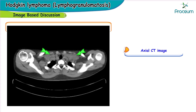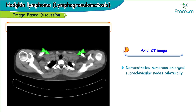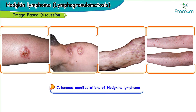Here is an axial CT image demonstrating numerous enlarged supraclavicular nodes bilaterally. Some of the cutaneous manifestations of Hodgkin's lymphoma can be seen in these images, showing secondary skin lesions. That concludes our discussion on Hodgkin's lymphoma. We look forward to seeing you in our next video. Thank you for watching.